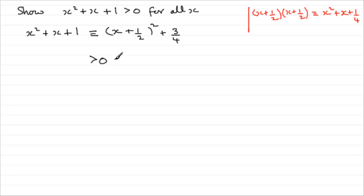And why is that? Well, the first term is squared. And if you square anything, it's always going to be positive. And then you're adding it to another positive term. So a positive term plus a positive term is always going to give you a positive term for all values of x.